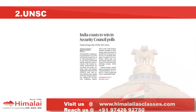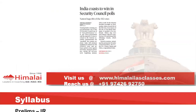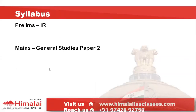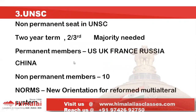The next important item is that India has secured a seat as a non-permanent member of the United Nations Security Council. This is big news, part of international relations and General Studies Paper 2. India has become a non-permanent member of the UNSC. The term for a non-permanent member is two years. The majority needed in the UN General Assembly to secure a UNSC seat is a two-thirds majority. There are five permanent members — US, UK, France, Russia, and China — and 10 non-permanent members selected for two-year terms. India got its seat from the Asia-Pacific region.